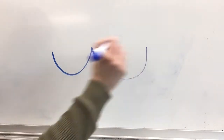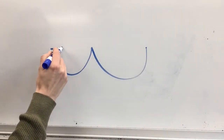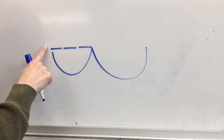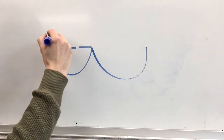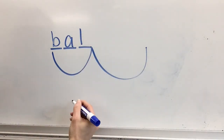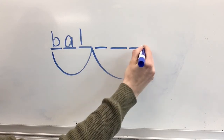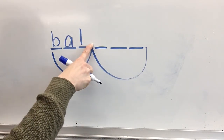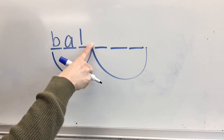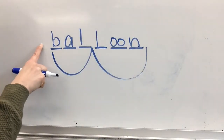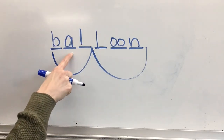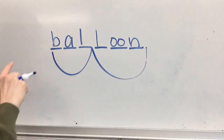Last word: balloon. What word? Balloon. Two parts. Stretch the sound you hear in bal: ball. Write your sound spellings for ball. Stretch the sound you hear in loon: l-oo-n. Write your sound spellings for loon. Balloon. Check your word. Spell balloon: B-A-L-L-O-O-N. Word: balloon. Yes, balloon.